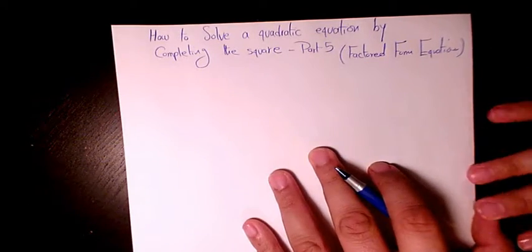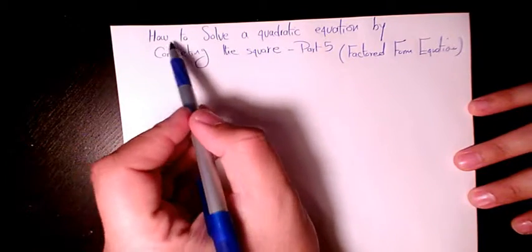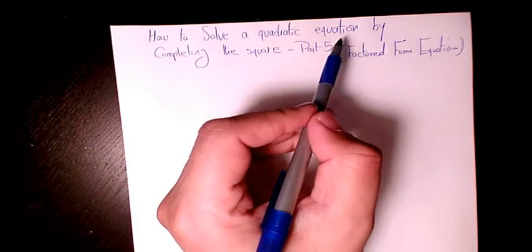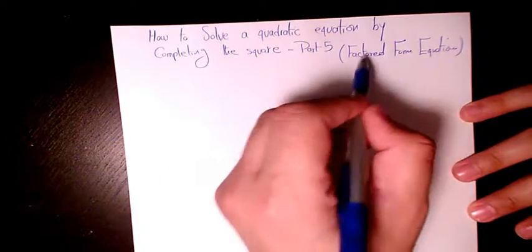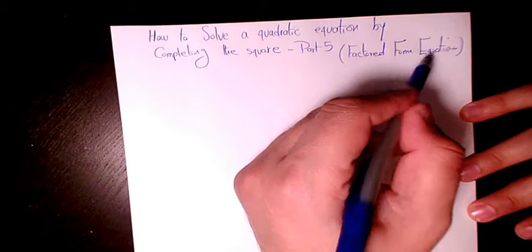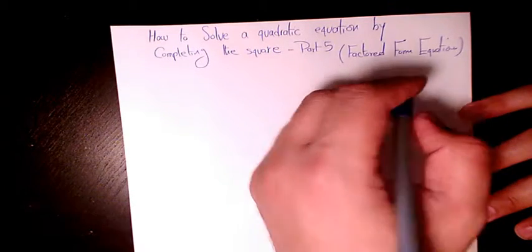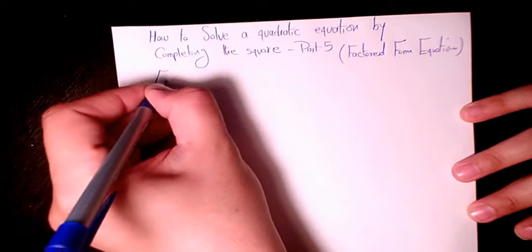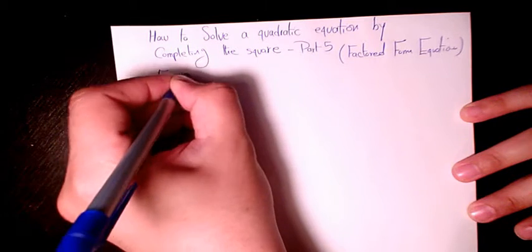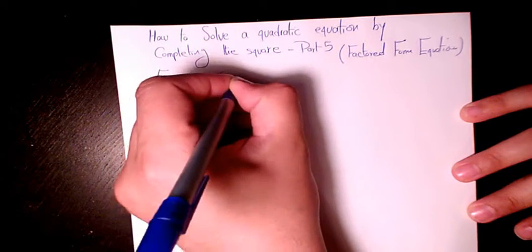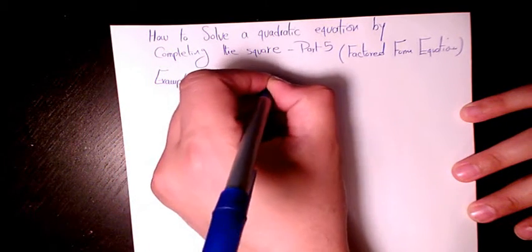What's up guys, this is Masi. Welcome to my channel. In this video I want to show you how to solve a quadratic equation by completing the square when we are dealing with a factor form equation. I'm going to show you three different examples. First example is x minus 3 times x plus 5 equals to 9.